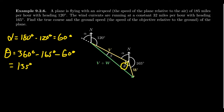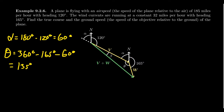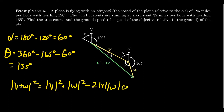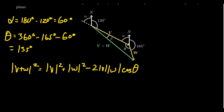Theta is the interior angle of our triangle. We now have side-angle-side: the airspeed side of 185, the angle theta of 135 degrees, and the wind speed side of 32. This means we can solve the triangle using the law of cosines. The ground speed squared equals 185 squared plus 32 squared minus 2 times 185 times 32 times cosine of 135 degrees.